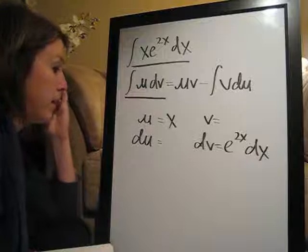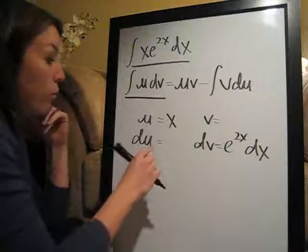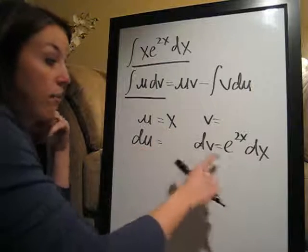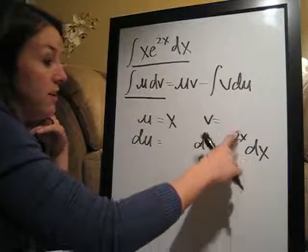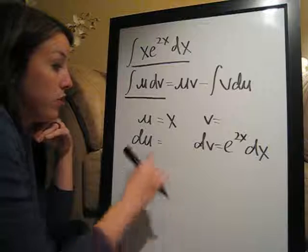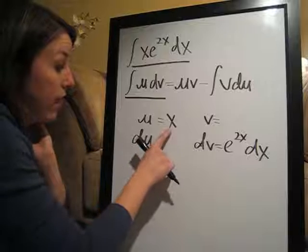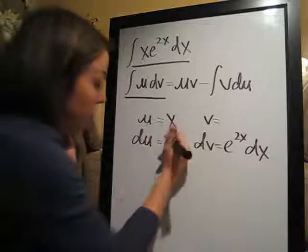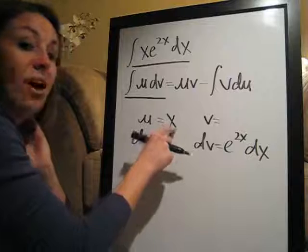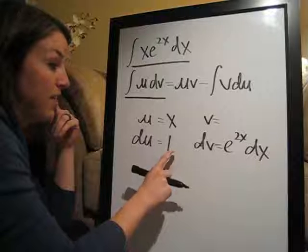And the way that we do that, the reason that we know to do it that way is because now that we've assigned these, we're going to take the derivative of x to get du, and we're going to take the antiderivative of e to the 2x dx to get v. So ultimately, the best thing that we can do is assign u to something that's going to become really simple. So when we take the derivative of x, it's just 1. du is going to be just 1, which is the simplest thing we can get. So that's going to help us out a lot. If we can assign u to something that becomes simpler when we take the derivative of it, that's ideal.